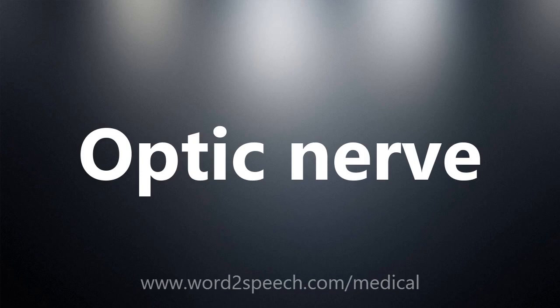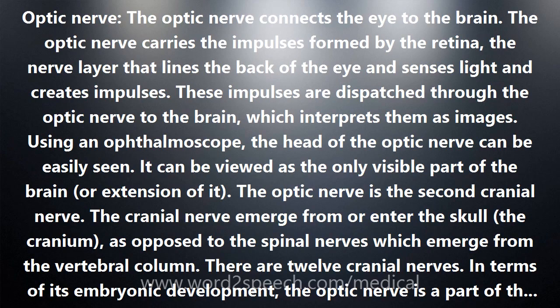The optic nerve connects the eye to the brain. The optic nerve carries the impulses formed by the retina — the nerve layer that lines the back of the eye and senses light and creates impulses. These impulses are dispatched through the optic nerve to the brain, which interprets them as images.